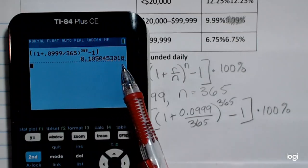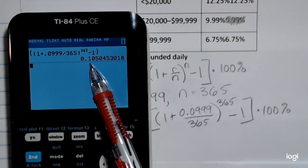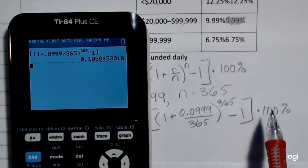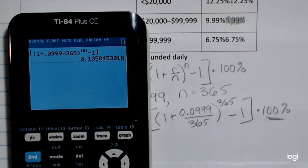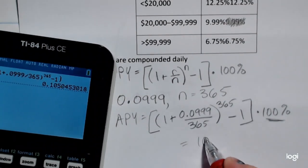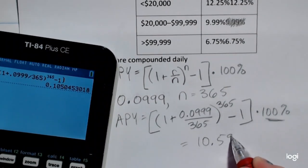All I have to do is take this and multiply it by 100 and put the percent symbol there. So that's going to be 10.5%.